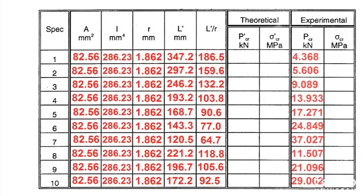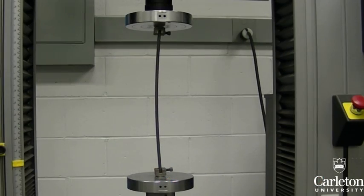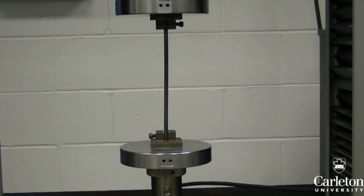Run the test for each column and record the experimental failure load, or P-critical. Here is a pinned-pinned column being tested. Here is the fixed-fixed column being tested.